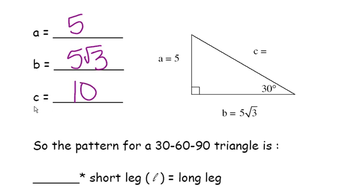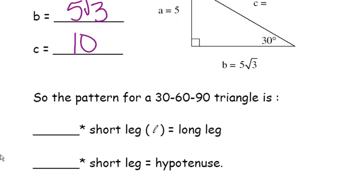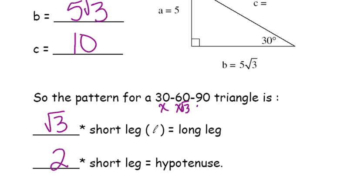Every single time we've done this, there has been a pattern: in order to get the long leg, I multiply the short leg by the square root of 3, and in order to get the hypotenuse, I multiply the short leg by 2. So the pattern for my 30-60-90 triangle is: if my short leg is X — that's the leg opposite the 30-degree angle — then the leg opposite the 60-degree angle is going to be X radical 3, and the hypotenuse is going to be 2X. That is my pattern for a 30-60-90 right triangle.